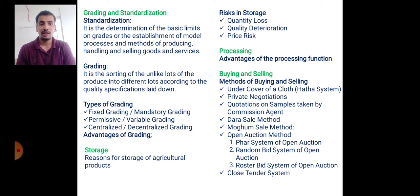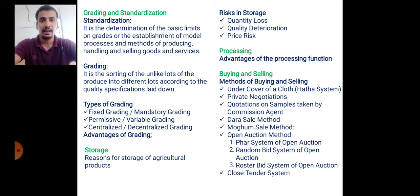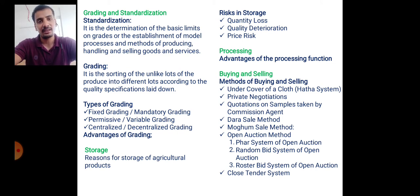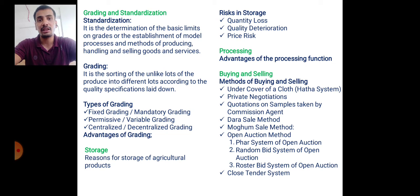In the under cover of cloth or hatha system, sellers sit in a particular place and under cover of cloth they press fingers using symbols to fix the price. Private negotiation means a middleman negotiates between two sellers. In the quotation on sample method, commission agents fix a quotation on the sample. The dara sale method is used for buying and selling of jeera (cumin). The last method is close tender system.